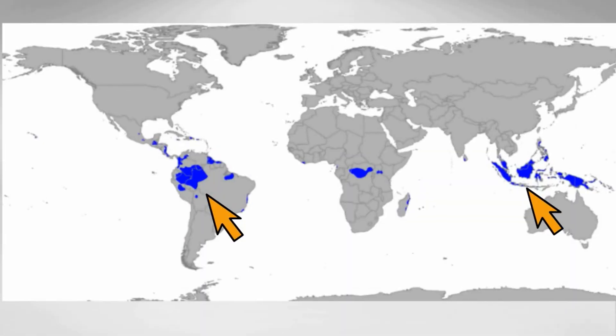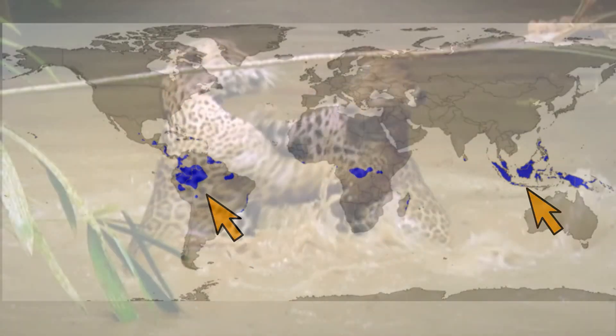Tropical Rainforests are found near the equator. Notice the location of the Tropical Rainforest on this map. Let's take a look at what the Rainforest looks like.